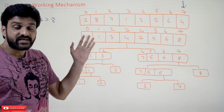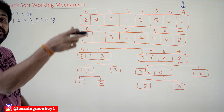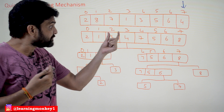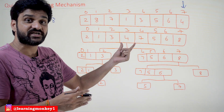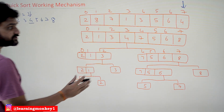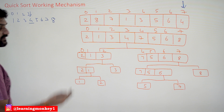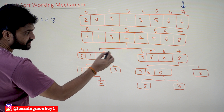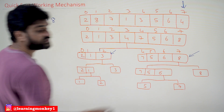In merge sort, we take the mid element and divide the array into two pieces based on that. But in QuickSort, we use the partition algorithm for division. The partition algorithm considers the pivot element, places it in its position, and then the left part and the right part are each divided further. When partition is applied again, the last element of each sub-array is considered as the pivot element for that sub-array.